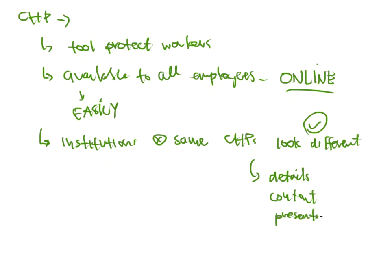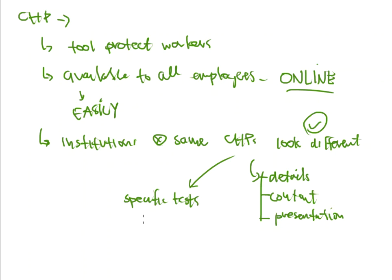Looking different also applies to presentation — some people make chemical hygiene plans very detailed and visually polished, others don't, and there are no regulations requiring a specific format. They can be as detailed or as lean as needed. Additionally, specific laboratories might have very specific tests they perform involving hazardous chemicals, and these can be described in great detail within the CHP, specifying how workers should handle and dispose of chemicals throughout that specific process.